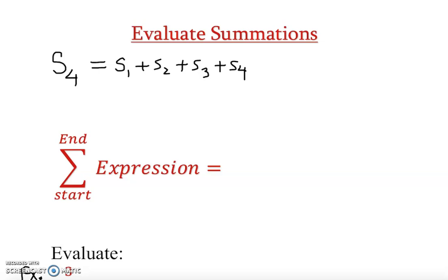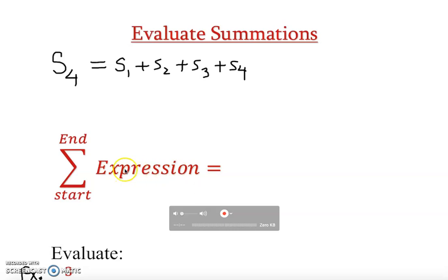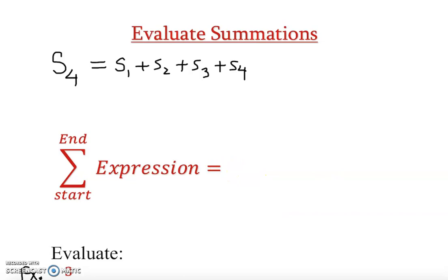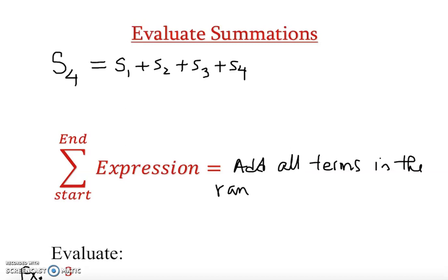There is a relationship between series and summation — they are almost the same thing. To introduce summation notation, we use the Greek letter sigma. Below sigma is the lower limit, which is the starting point, and above sigma is the upper limit, which is the ending point. To the right is the expression. We substitute values from the starting point to the ending point and add all the terms in that range.